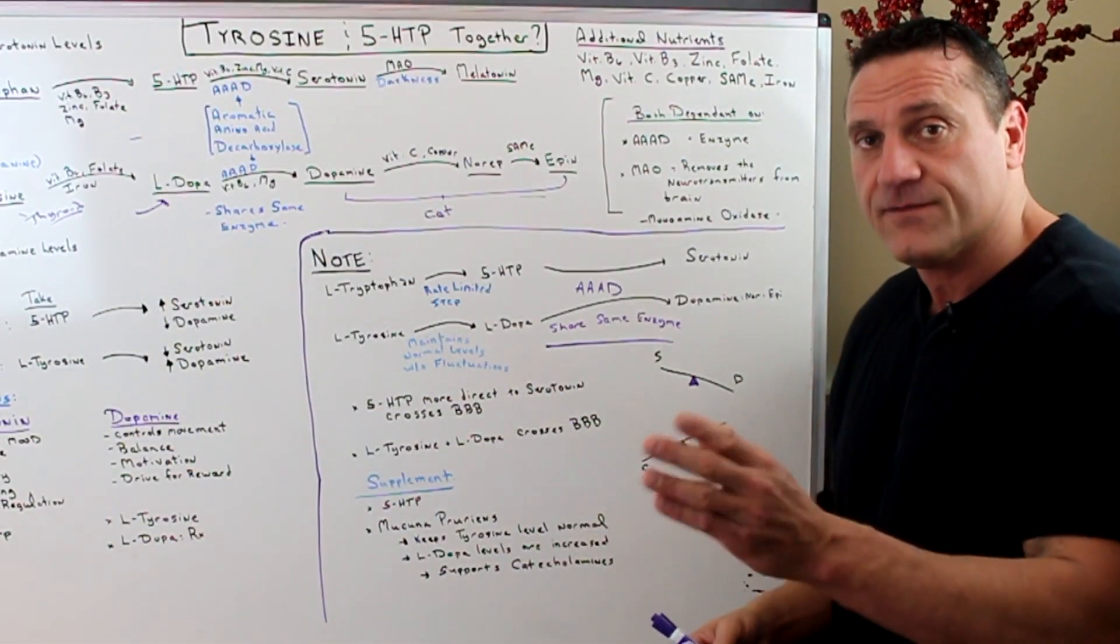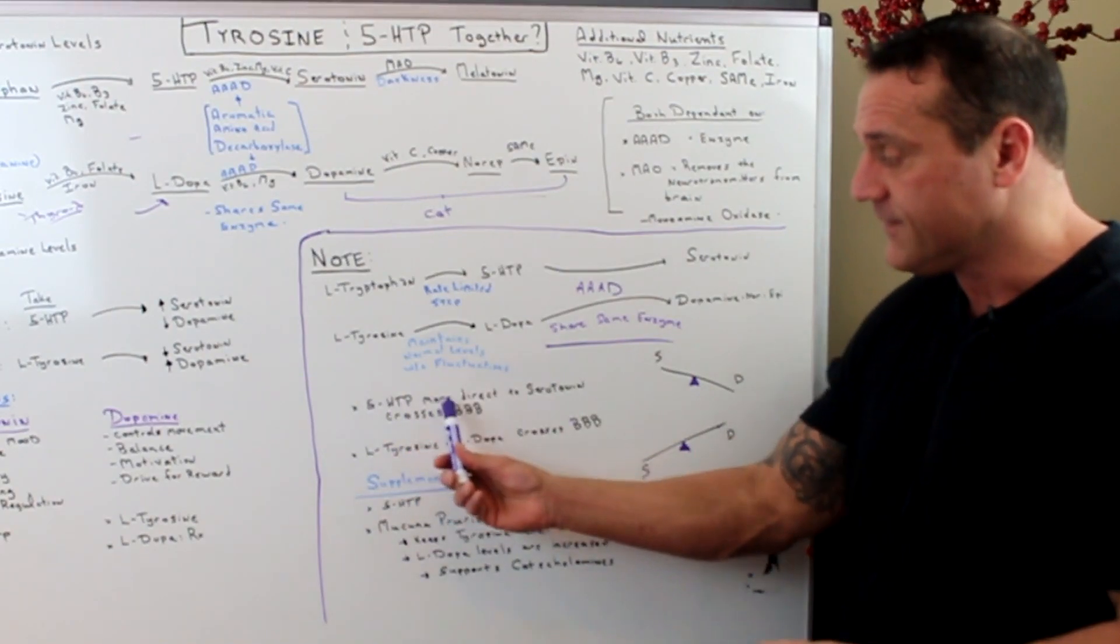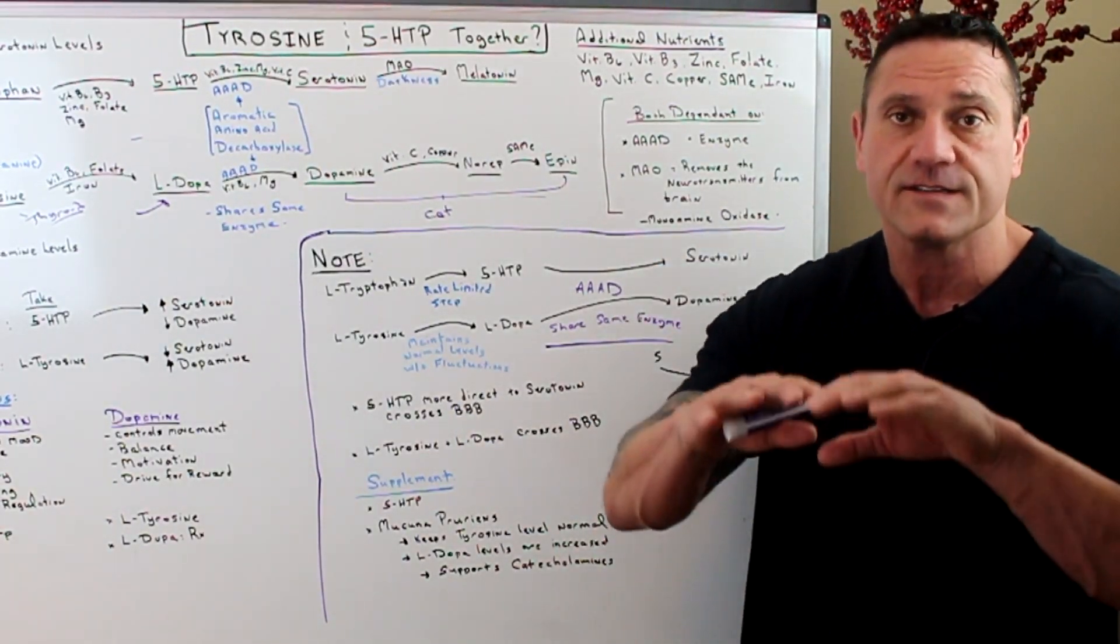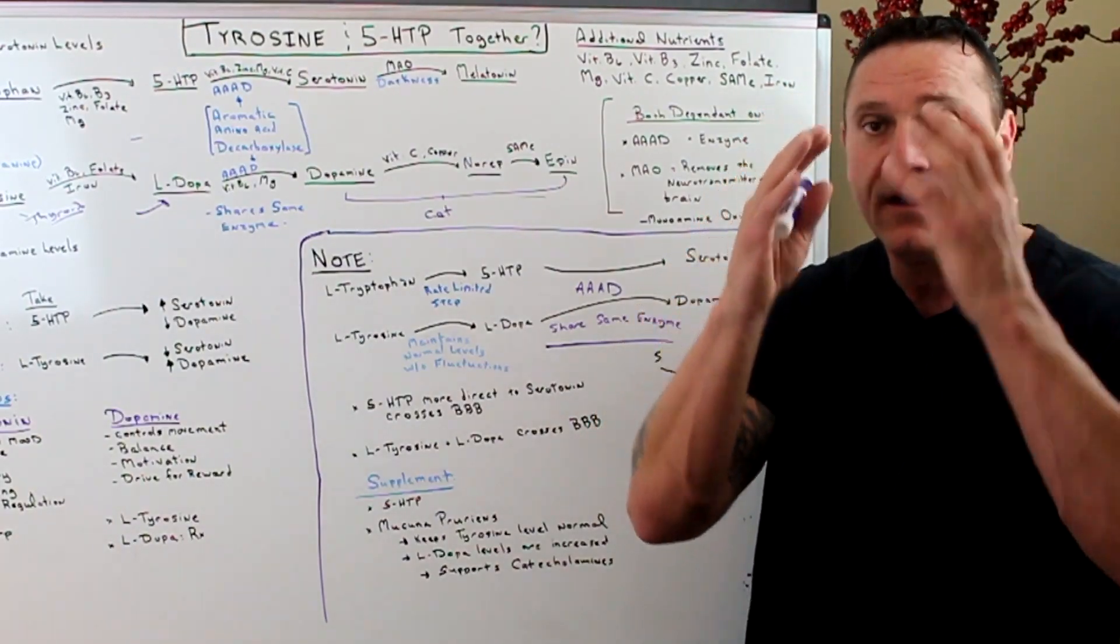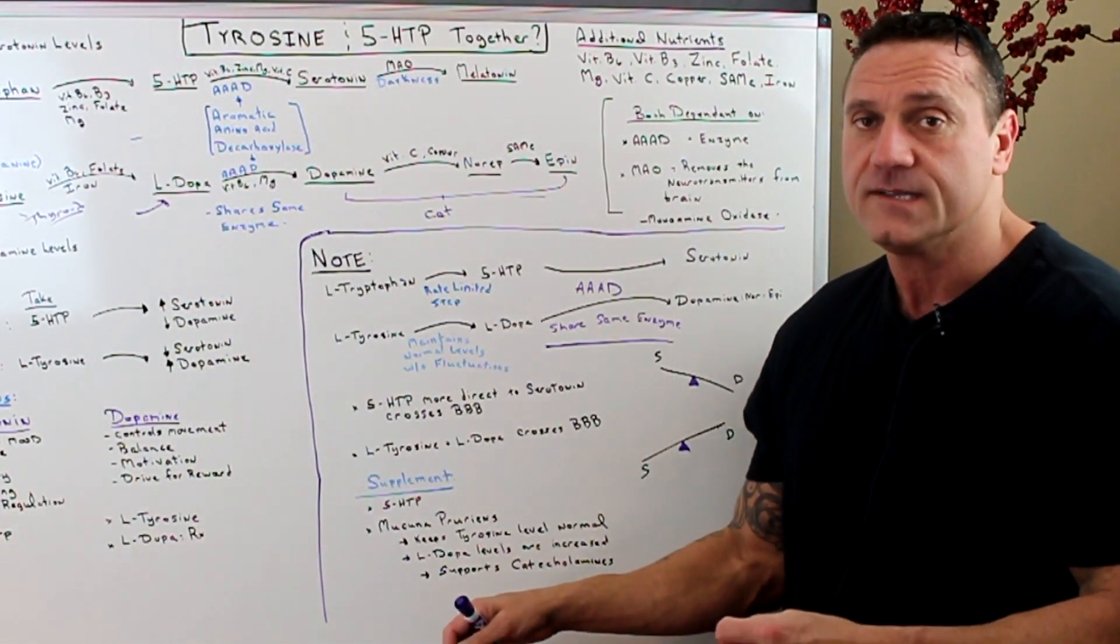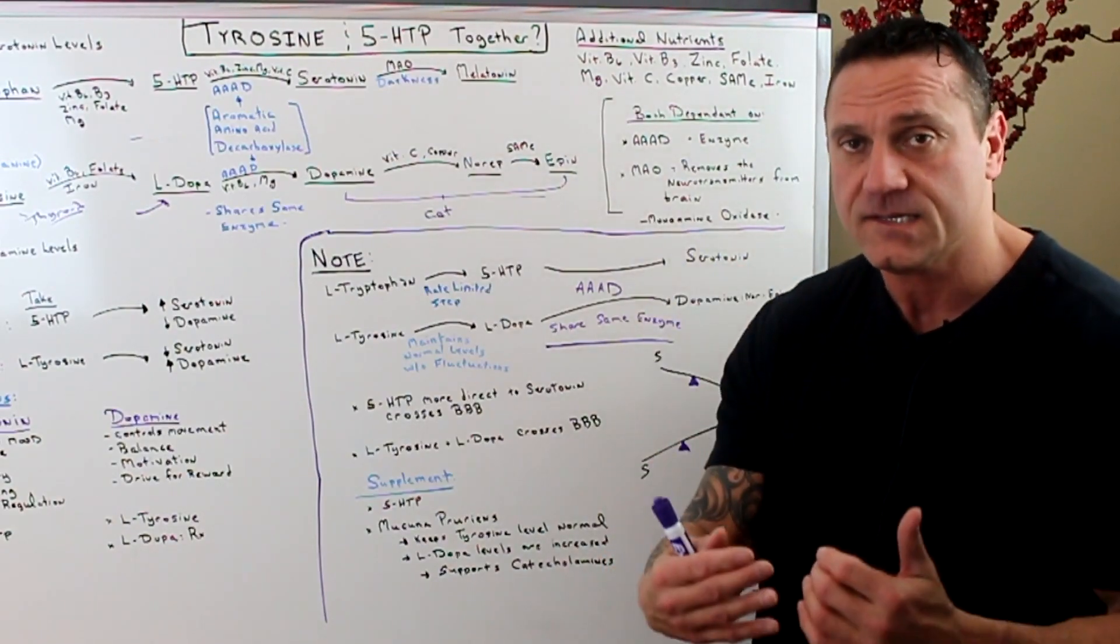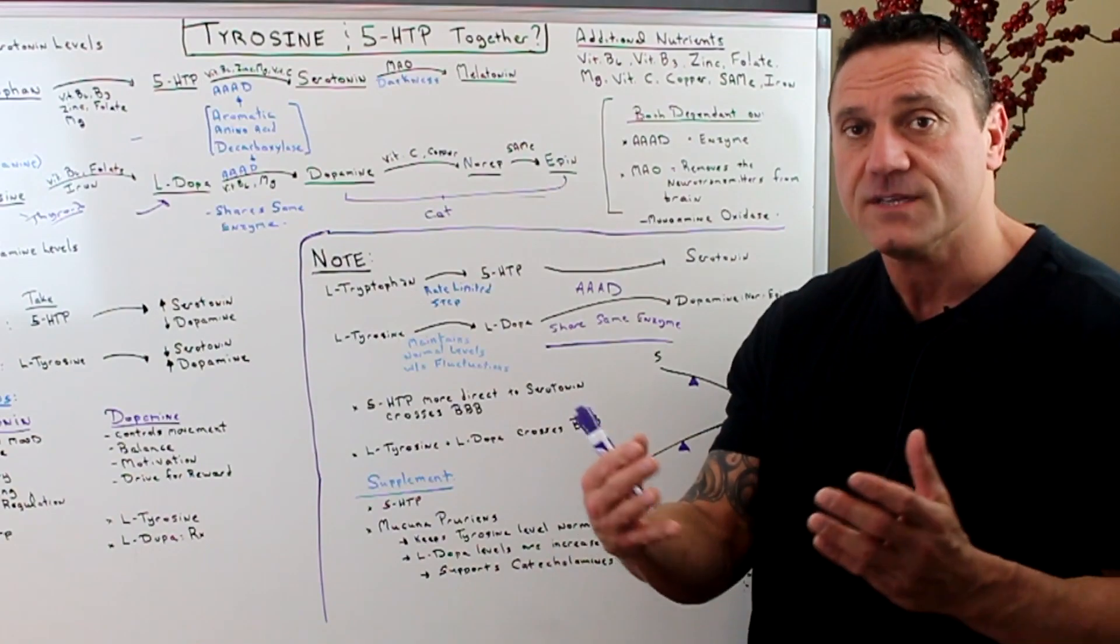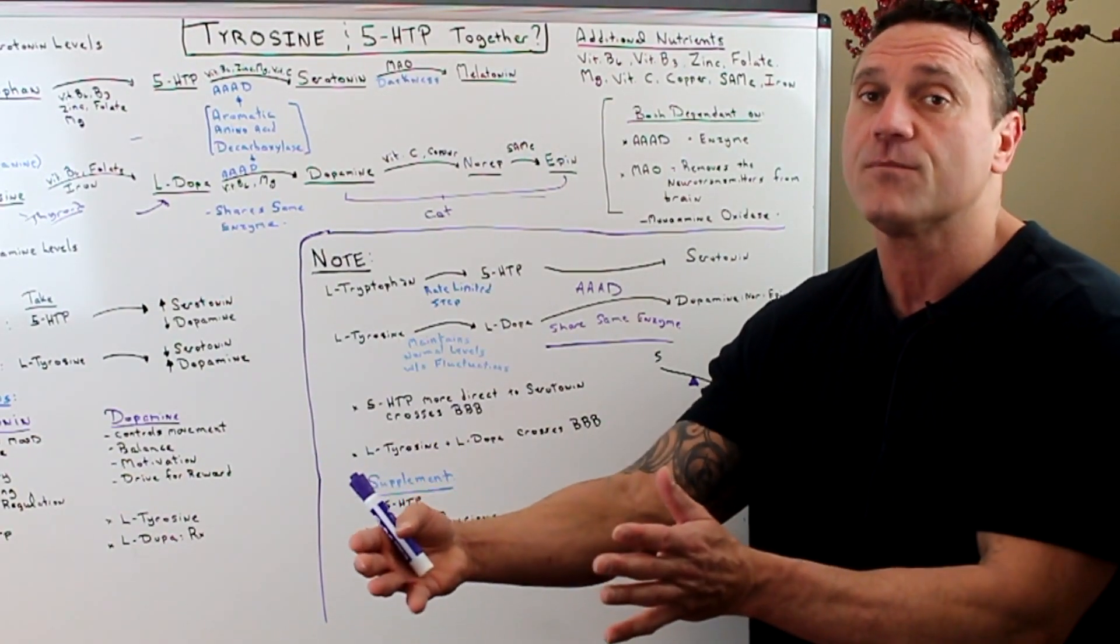The thing about 5-HTP versus tryptophan is that 5-HTP is more direct to serotonin because we have this blood-brain barrier. It's like a sulfate wrap over the brain, which allows only certain things to pass through. 5-HTP is one of them and also L-tyrosine and L-DOPA and mucuna pruriens. It bypasses the gatekeeper and it hits the brain directly. So this is why sometimes these supplements are more effective.